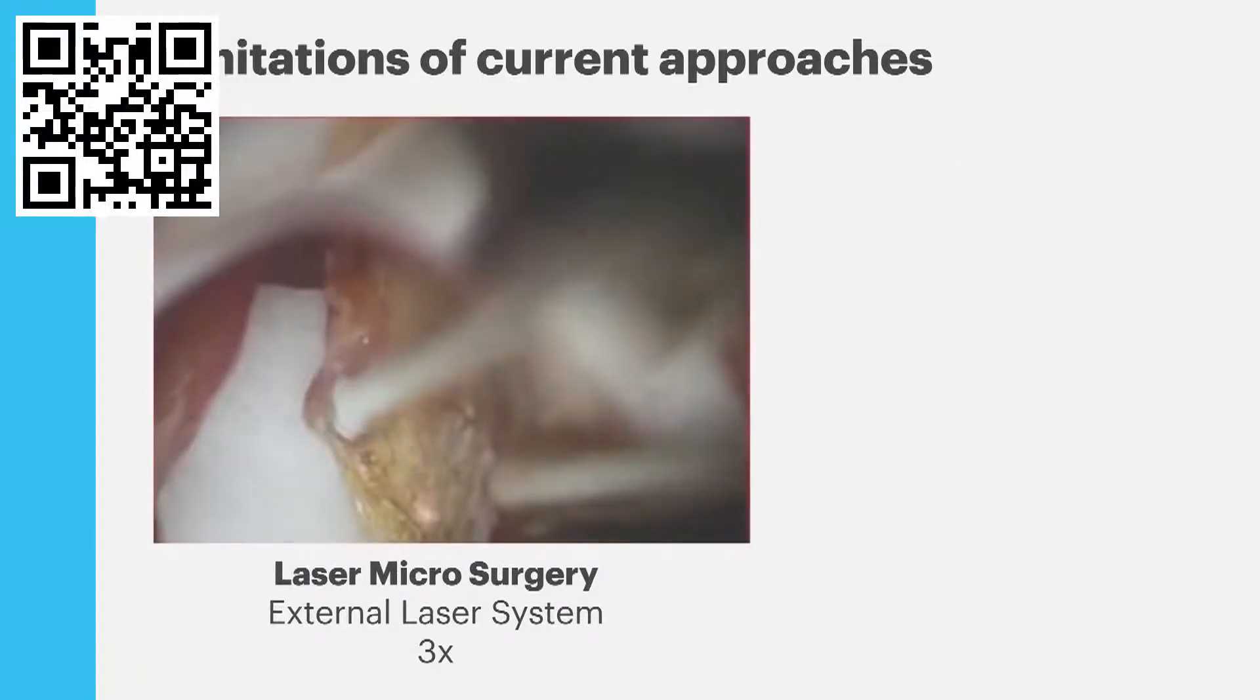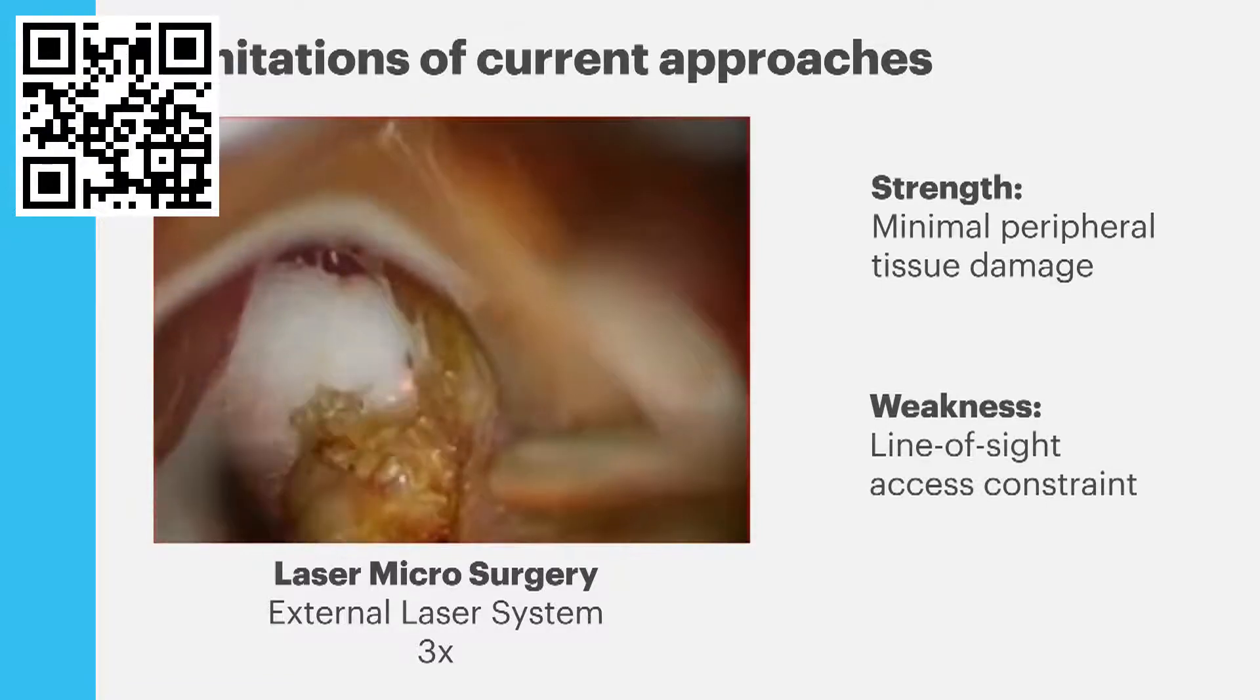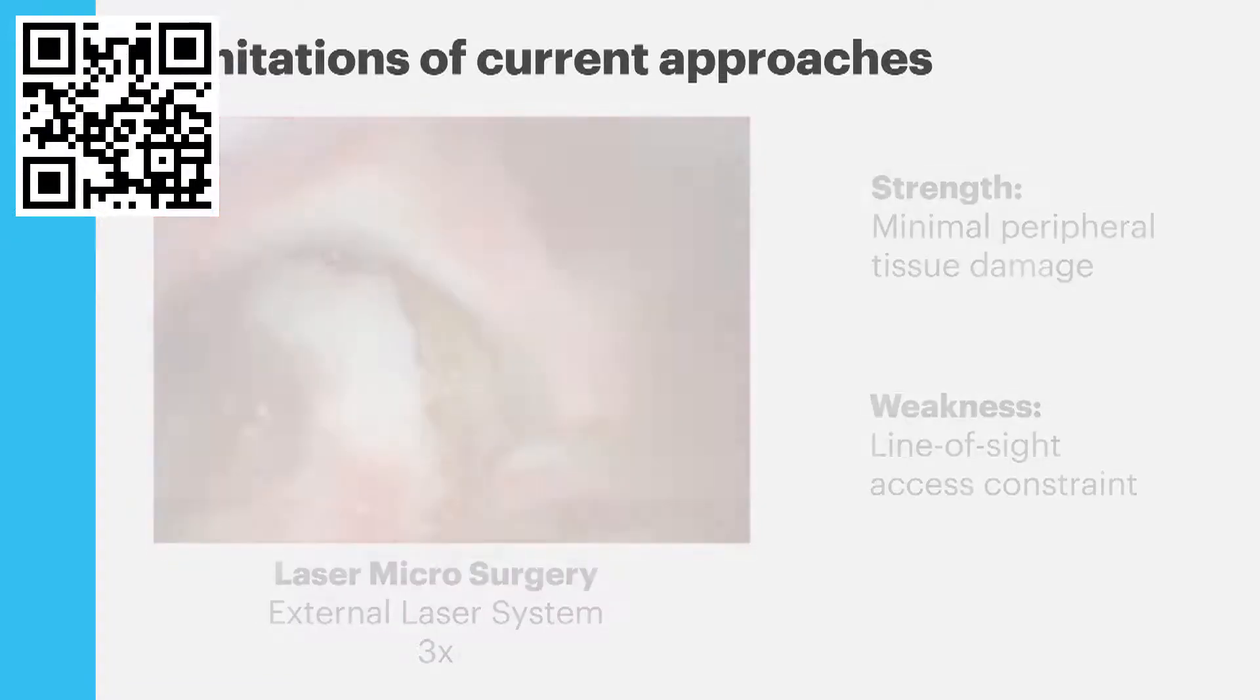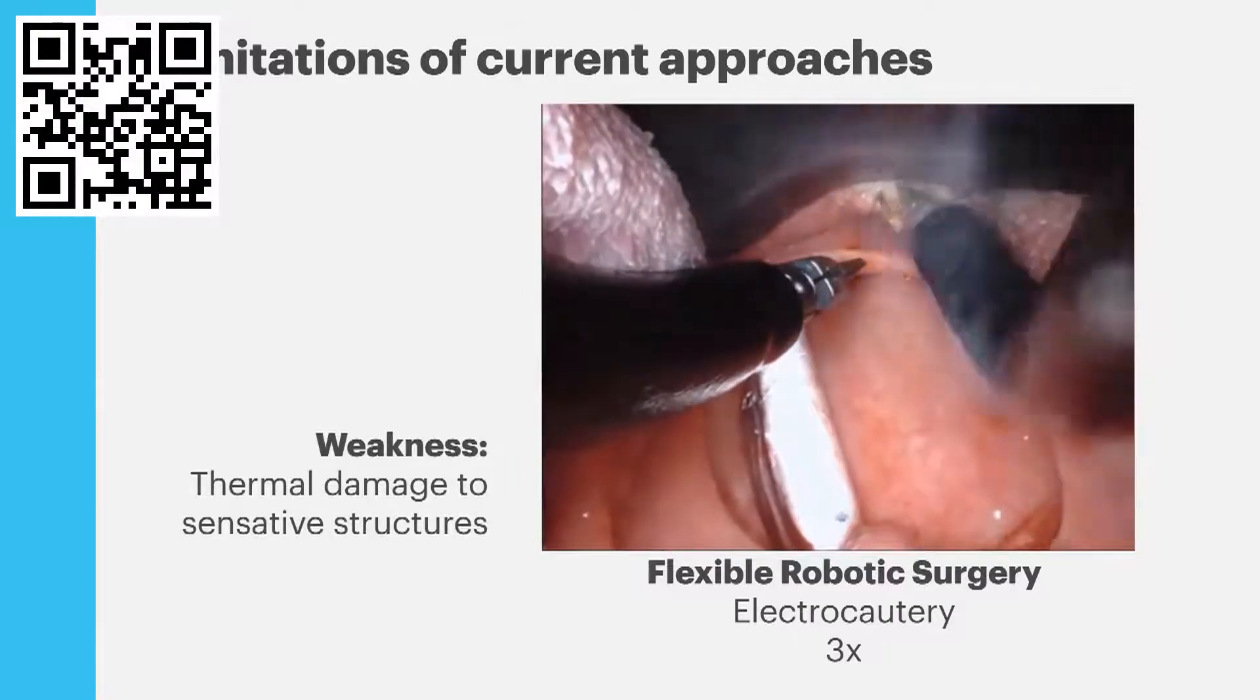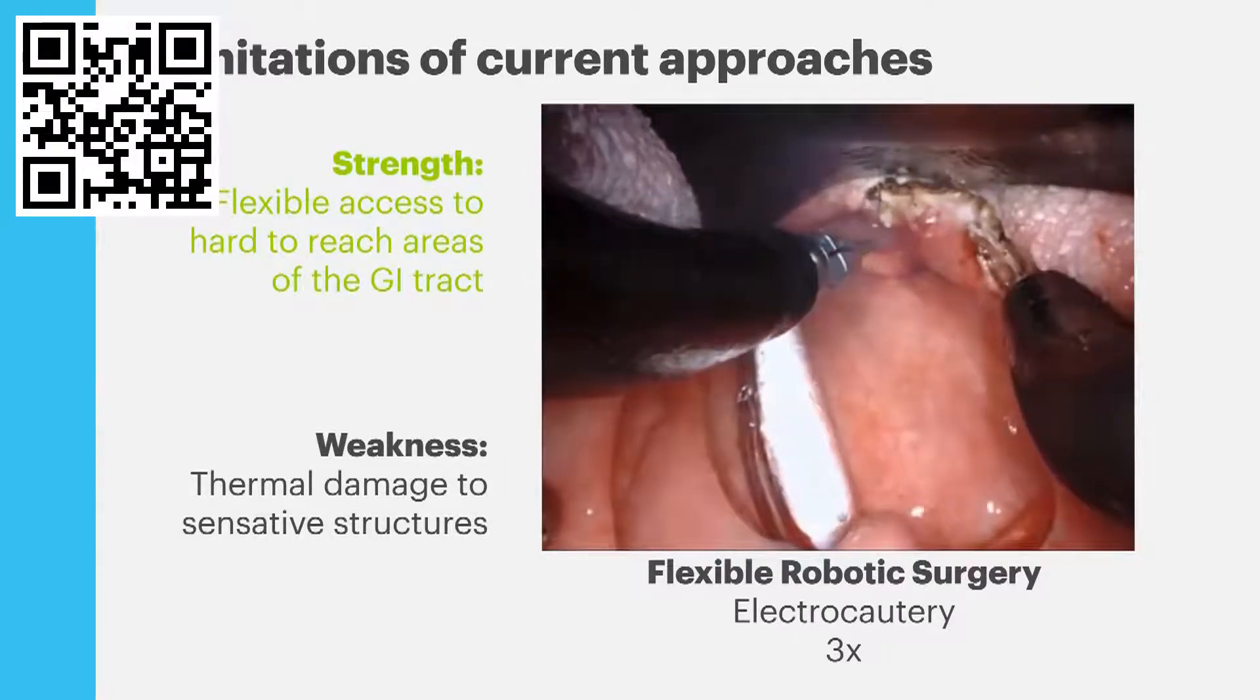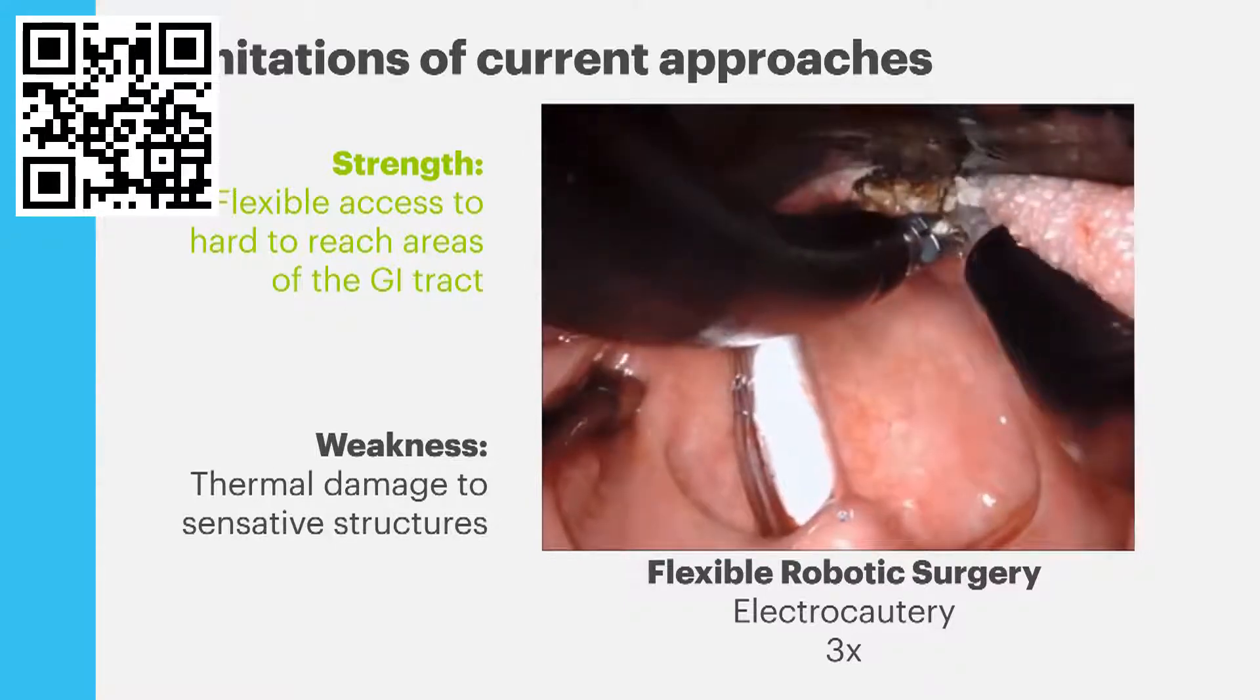There are pros and cons of the two approaches. With the laser microsurgery we get really nice incisions but we're limited by that line of sight access constraint. With the flexible robotic surgery we have this thermal damage, the carbonization, but we have flexible access so we can access lesions more readily and have better visualization at the surgical site.